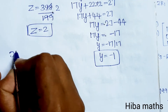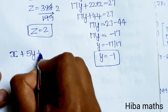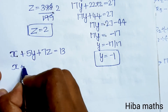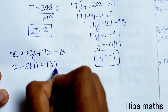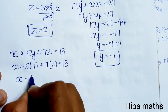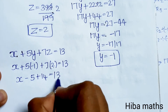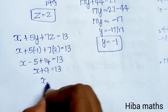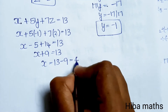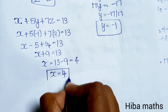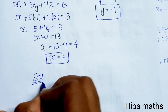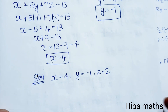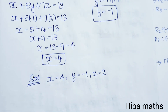Now substituting into the first equation to find x: x plus 5y plus 7z equals 13. So x plus 5 times minus 1 plus 7 times 2 equals 13. That gives x minus 5 plus 14 equals 13, so x plus 9 equals 13. Therefore x equals 13 minus 9, which equals 4. The solution is x equals 4, y equals minus 1, z equals 2.